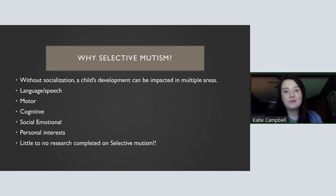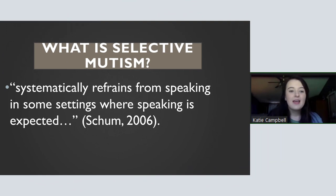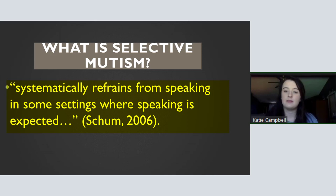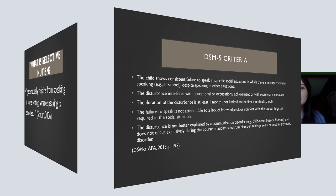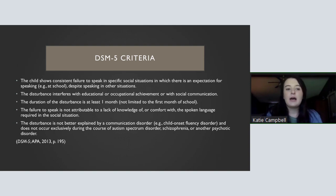So you may be asking: what is selective mutism? I really like the definition I found in my research — it describes someone who systematically refrains from speaking in some settings where speaking is expected. Most of the time this is found in school settings: a teacher will report that a child is not speaking when called on in class and may think it's a behavior issue, when in reality the child is just too anxious to speak. The DSM-5 criteria states the child shows consistent failure to speak in specific social settings where there is an expectation for speaking, despite speaking in other situations.